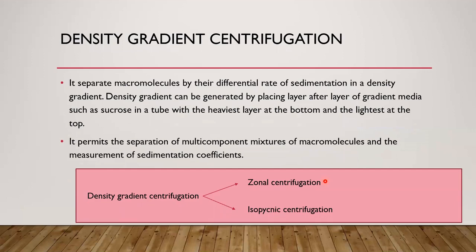Density gradient centrifugation is the method where components of a sample are separated on the basis of their density in a dense medium or a density gradient in a centrifuge. Molecules can be separated by their differential rate of sedimentation in a density gradient. This density gradient can be generated by placing layer after layer of gradient media — such as sucrose — in a tube, with the heaviest, densest layer at the bottom and the lightest layer at the top. It permits the separation of multi-component mixtures of macromolecules and the measurement of sedimentation coefficients. There are two types: rate zonal centrifugation and isopycnic centrifugation.